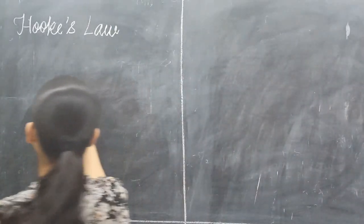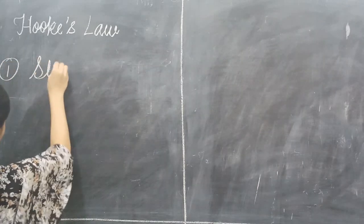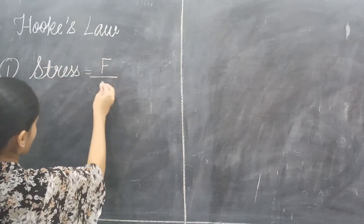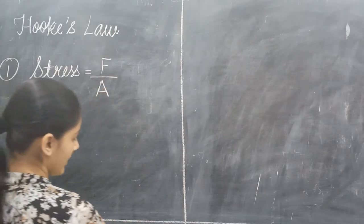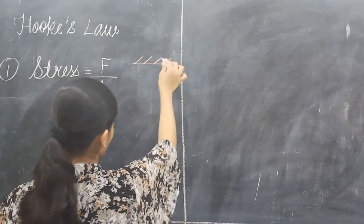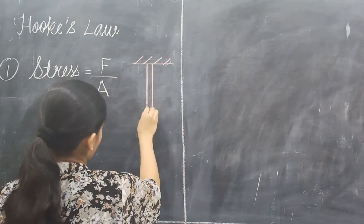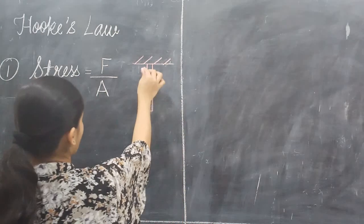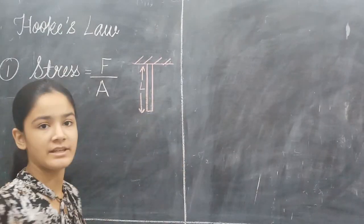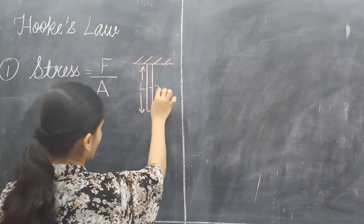Stress is defined as force per unit area. Here we are taking an example of a wire. This is the rigid support of the wire. We consider this as the wire, so the original length of the wire we will take as capital L, and let the radius of the circular wire be small r.